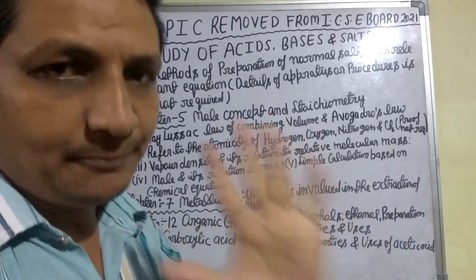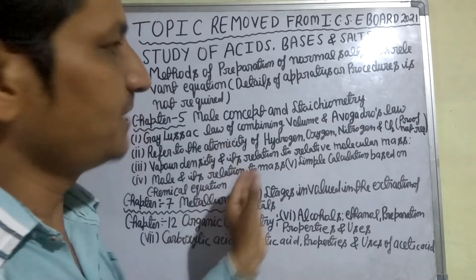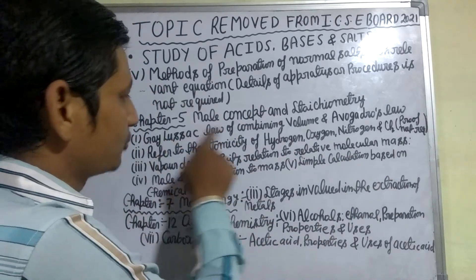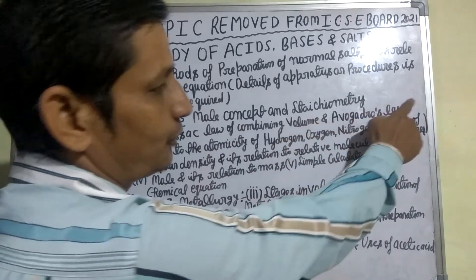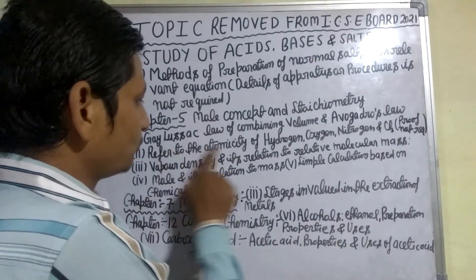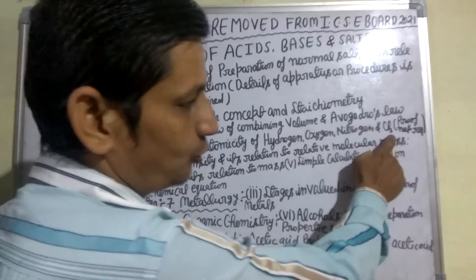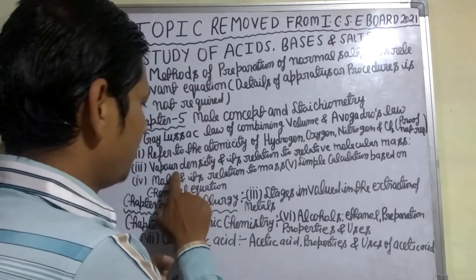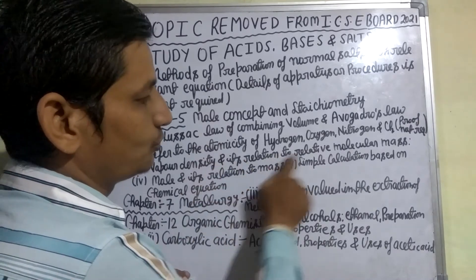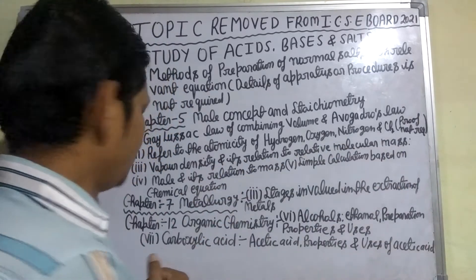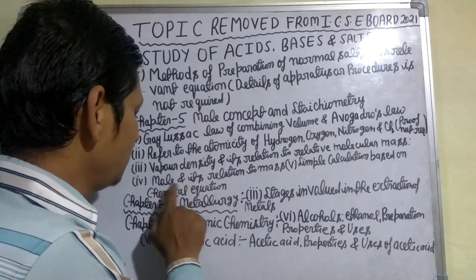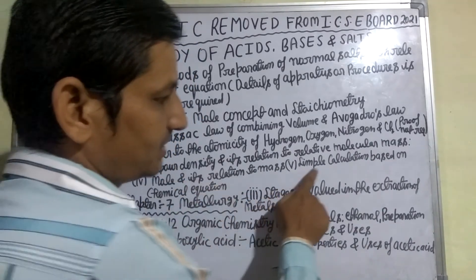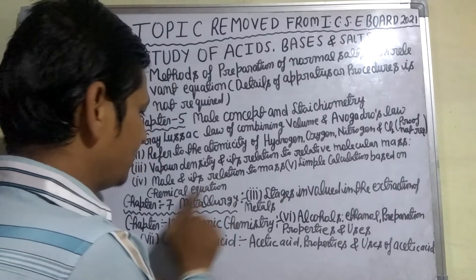So dear students, to recap: 5 topics are removed from Mole Concept and Stoichiometry — Gay-Lussac's law of combining volumes and Avogadro's law; atomicity of hydrogen, oxygen, nitrogen and chlorine (proof not required); vapor density and its relation to relative molecular mass; mole and its relation to mass; and simple calculations based on chemical equations.